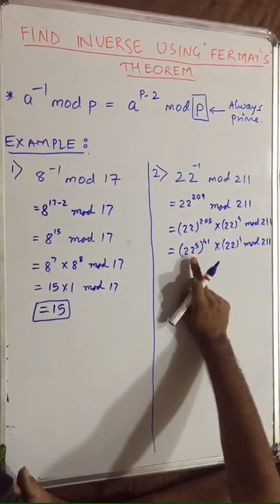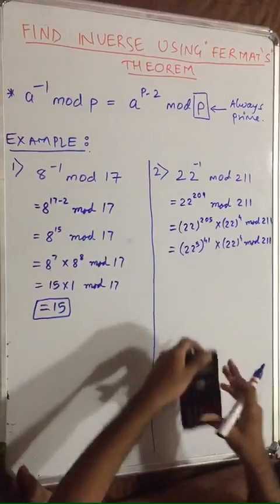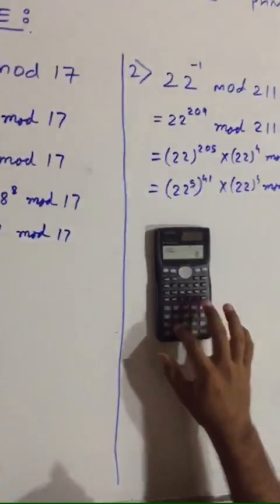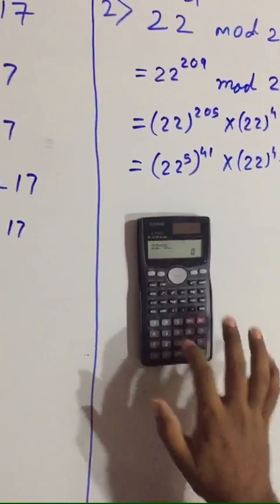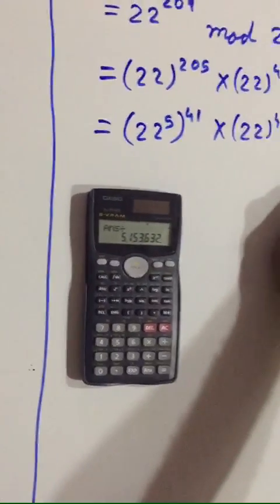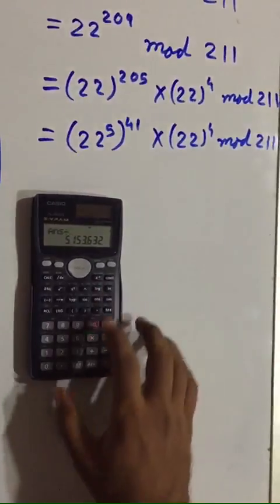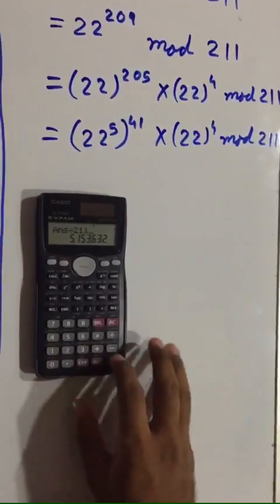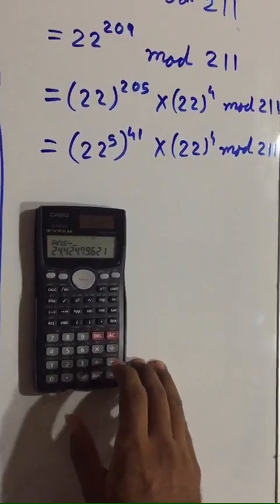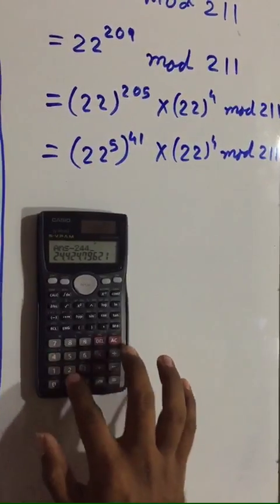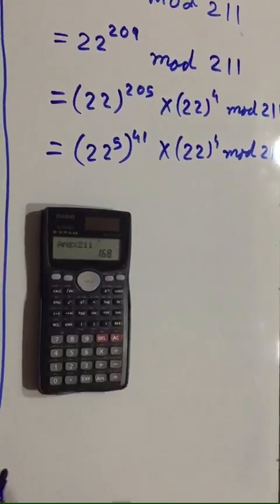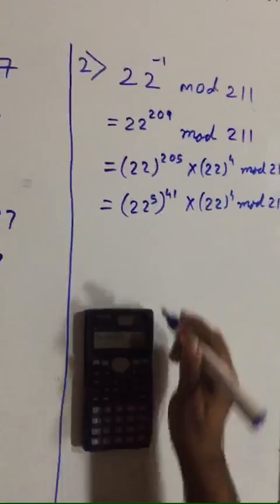Now let us find the mod for 22 raised to 5. Using the calculator, we divide 22 raised to 5 by the prime number p, which is 211. Divide it by 211, then subtract all the numbers before the decimal — so subtract 24424. Multiply it with 211, which gives us 168.